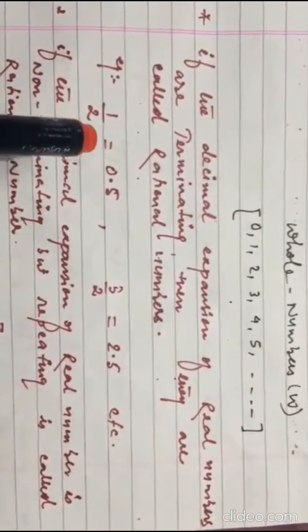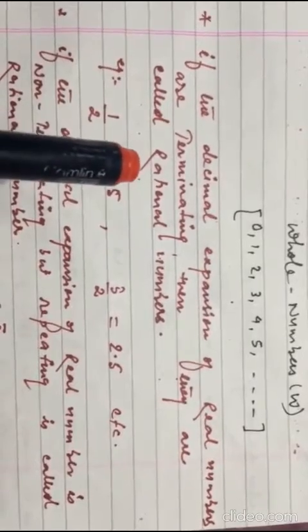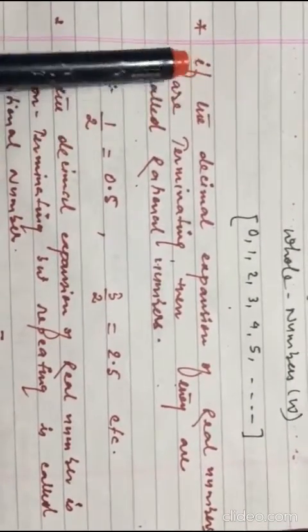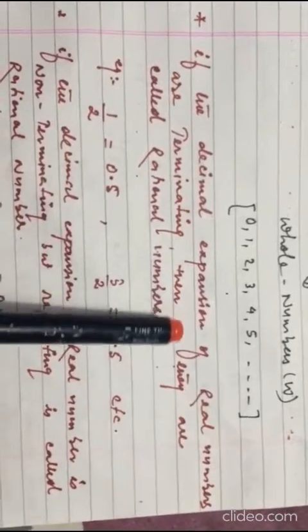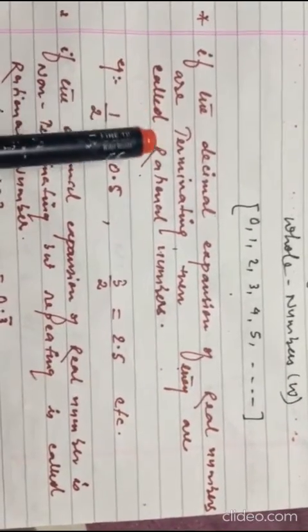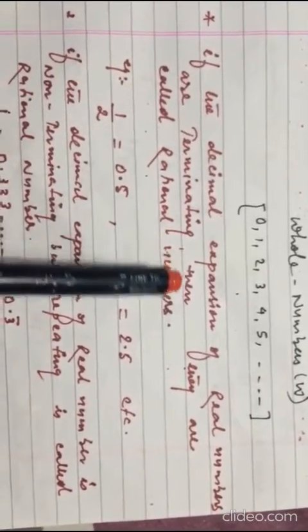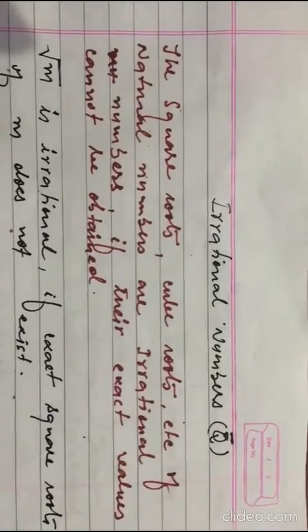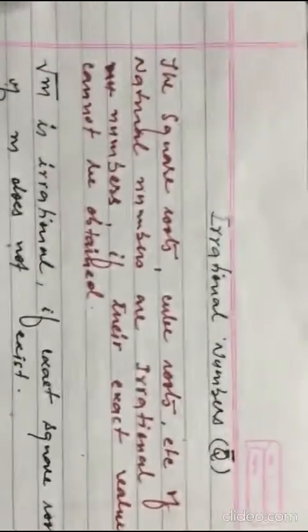Now, rational number is also defined in terms of decimal expansion. If the decimal expansion of real numbers are terminating, then they are called irrational numbers.